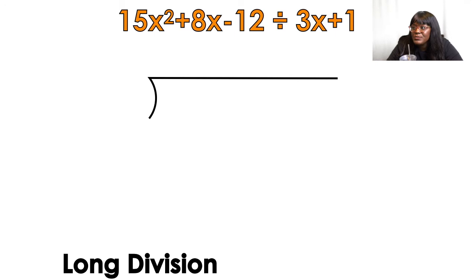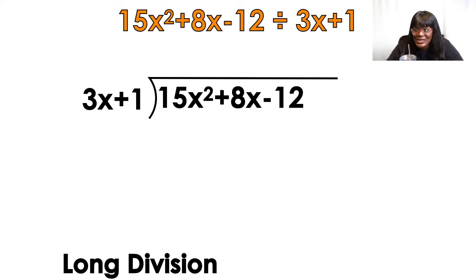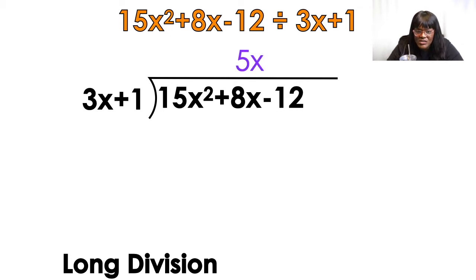Let's try it again. I'm going to set up my problem, make sure it's in descending order — x squared, x, and then no x at all — and put my divisor on the outside: 3x plus 1. We're going to start the process from scratch. What times 3x equals 15x squared? So 3 times what equals 15? 5. x times what equals x squared? x. So that is 5x.